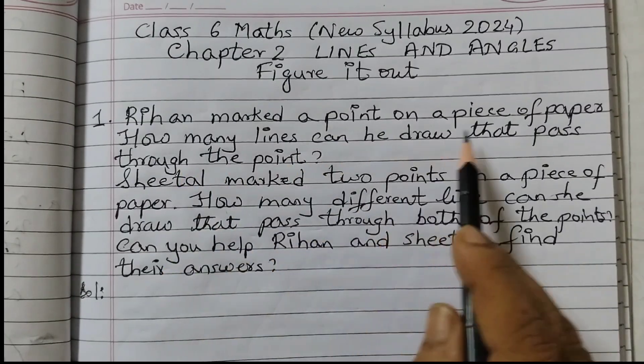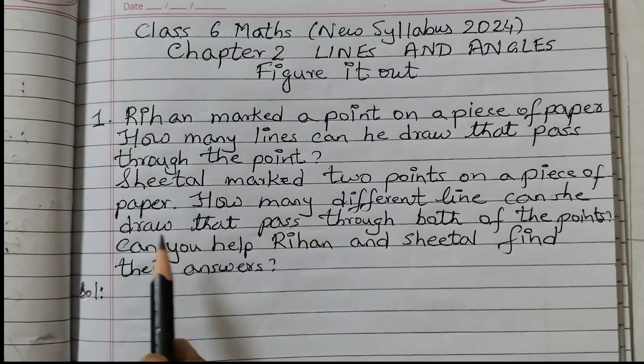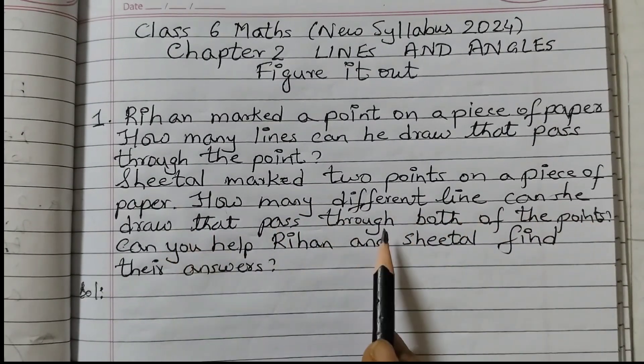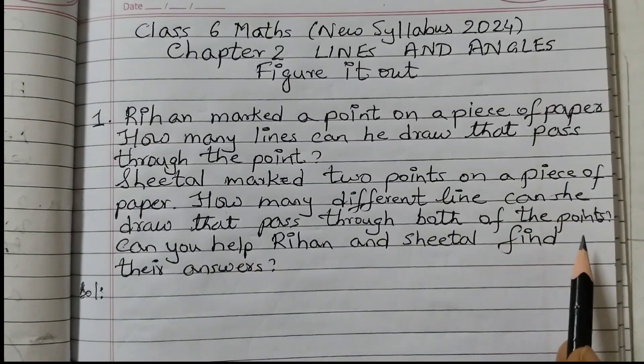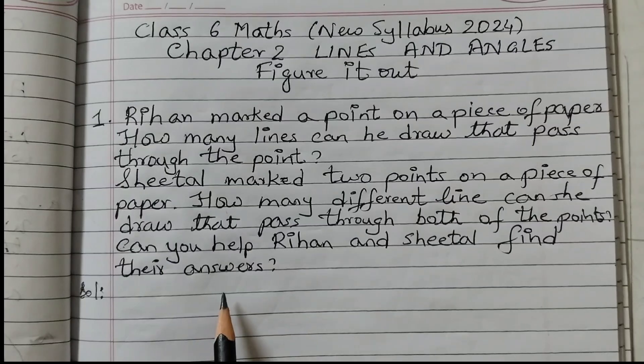Rihan marked a point on a piece of paper. How many lines can he draw that pass through the point? Sheetal marked two points on a piece of paper. How many different lines can she draw that pass through both of the points? Can you help Rihan and Sheetal find their answers?